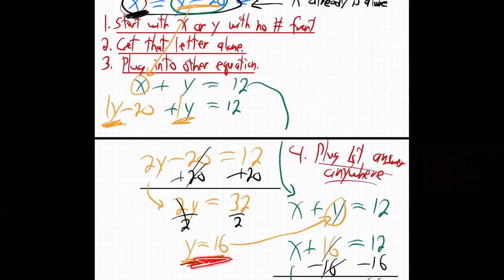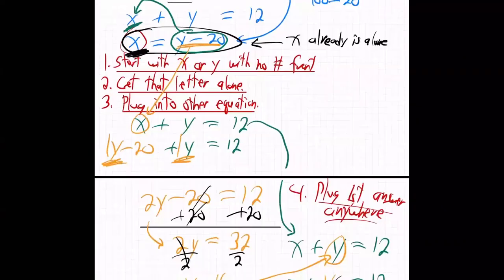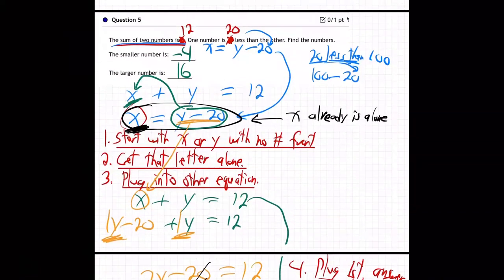Solve for Y. Got Y. Plug that in anywhere right there to get X. Got X. We got X and we got Y. So what are the two answers? 16 and minus 4. So the smaller number is minus 4. The bigger number is 16. And there we go.